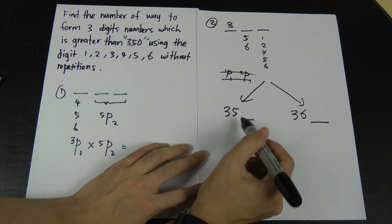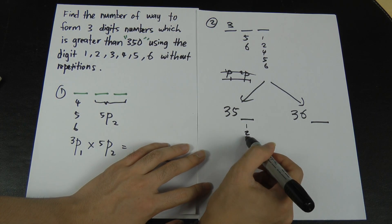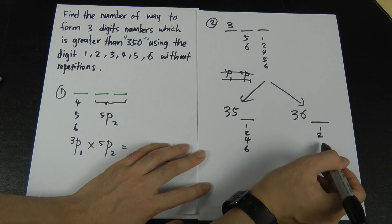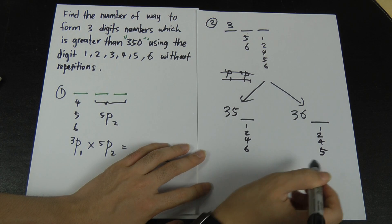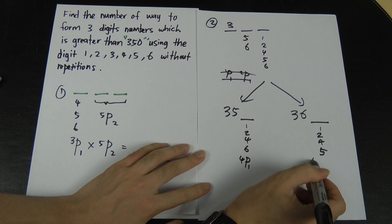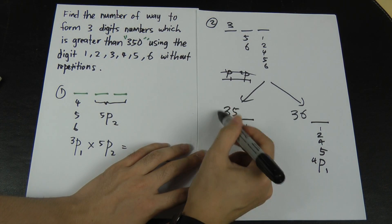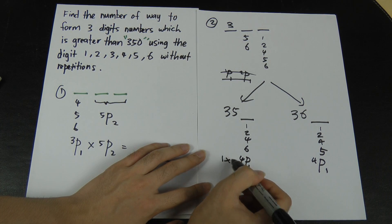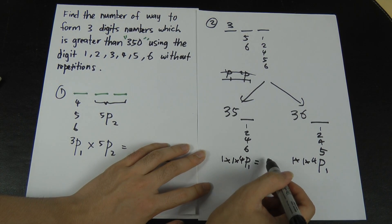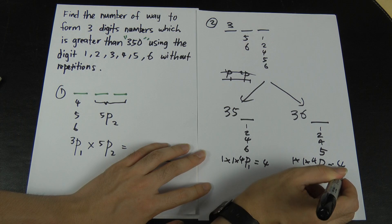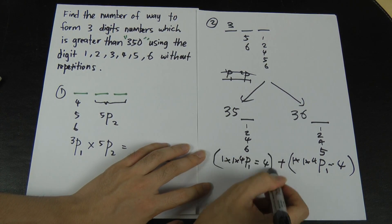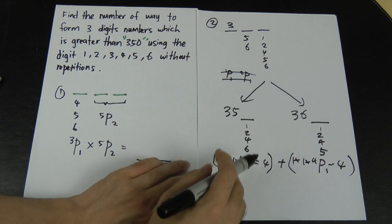For sub-case 3-5-?, the remaining choices for the last digit are 1, 2, 4, 6 — that's 4 numbers, so 4P1 = 4. For sub-case 3-6-?, the remaining choices are 1, 2, 4, 5 — also 4 numbers, so 4P1 = 4. Each sub-case is 1 × 1 × 4 = 4. Combined, Case 2 gives 4 + 4 = 8.